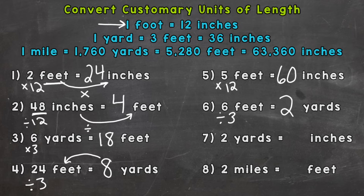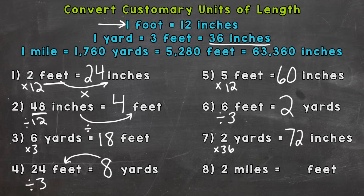Number seven: two yards equals how many inches? Looking at the reference notes, one yard equals 36 inches — the same as three feet. So we do two times 36: two groups of 36, like having two yardsticks each 36 inches long. Two times 36 equals 72 inches.